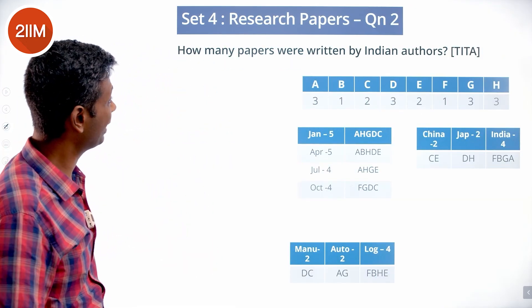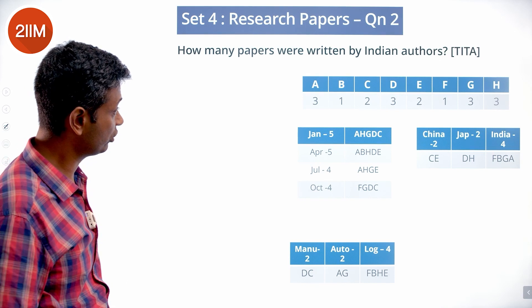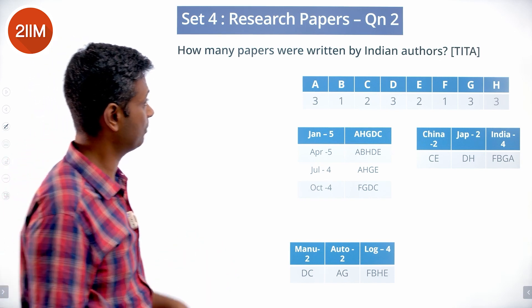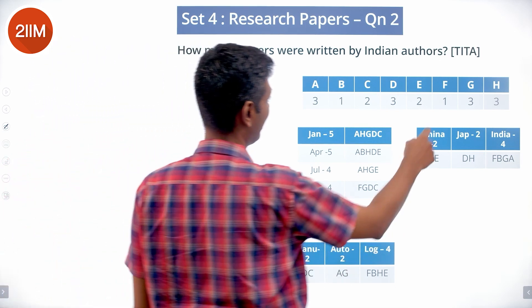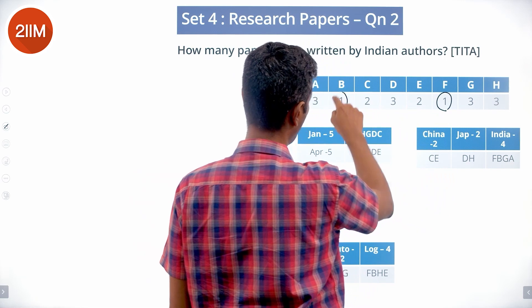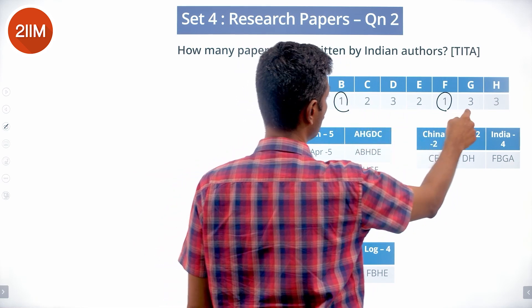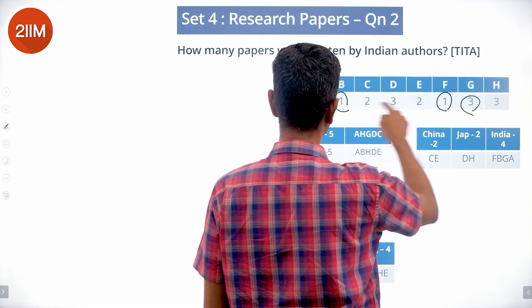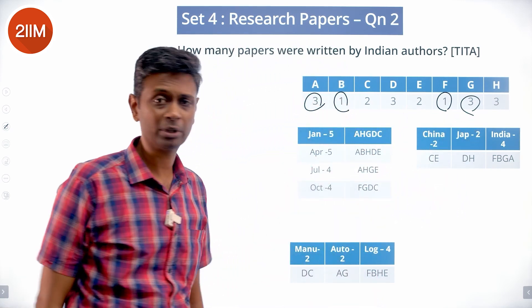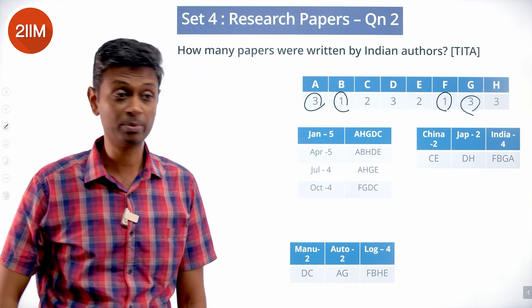Question: How many papers were written by Indian authors? Indian authors are F, B, G, A. F wrote 1, B wrote 1, G wrote 3, A wrote 3. That is 1+1+3+3 = 8 papers.